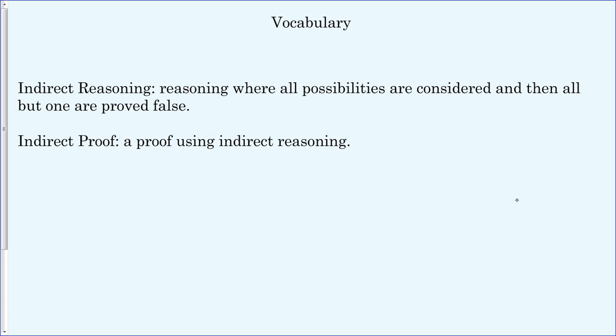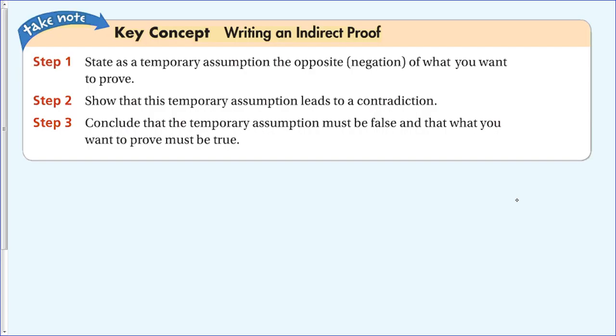There are three key steps to writing an indirect proof. Step one: state as a temporary assumption the opposite, or negation, of what you want to prove. For example, if you want to prove the sky is blue, you temporarily state the sky is not blue — not that it's red or orange, just that it is not blue. Step two: show that this temporary assumption leads to a contradiction — give some fact that proves the sky is blue.